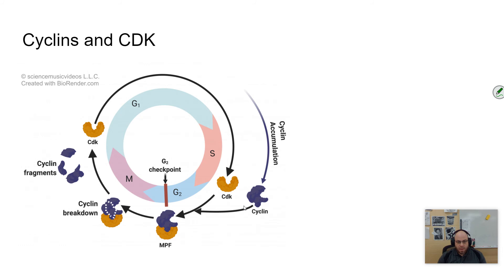CDK will go back around and meet new cyclin once the new cell cycle continues. So again, CDK is required for cyclin to activate. Once it activates, it initiates cell division. And once cyclin starts to degrade, cell division is over.